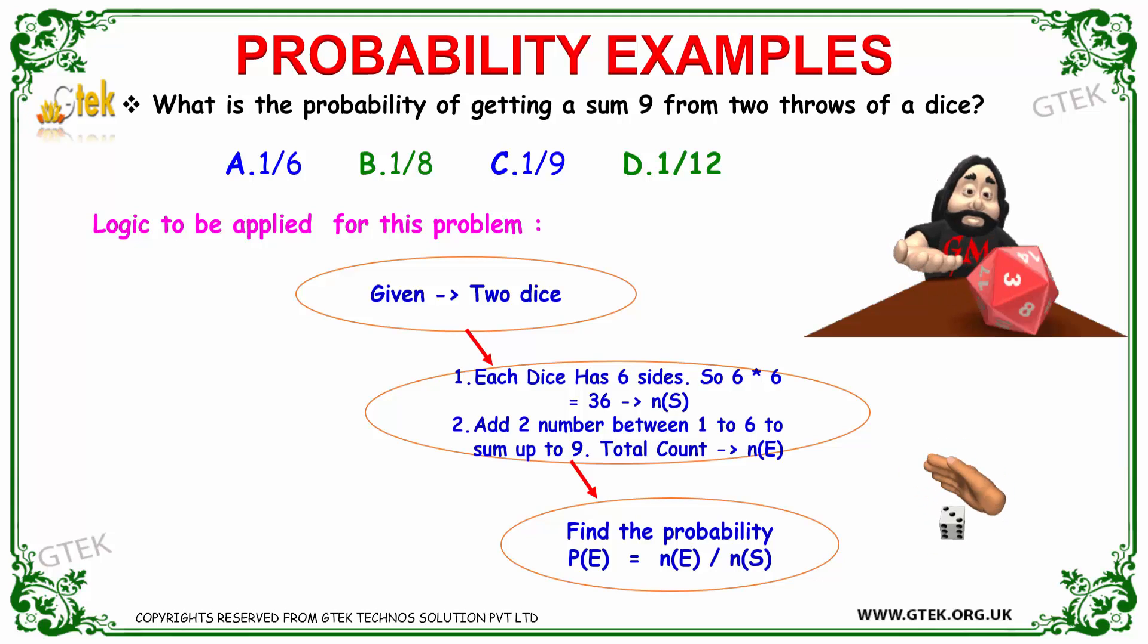Now let's see some interesting probability problems. What is the probability of getting a sum of 9 from two throws of a dice? A person has two dice and is going to throw them. Given are two dice.